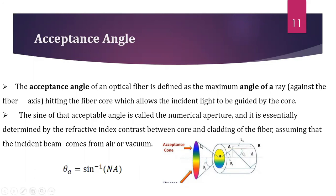Now let us see the acceptance cone. Light rays which enter into the core medium within the acceptance angle are allowed to propagate throughout the core medium. The acceptance cone is formed by rotating the acceptance angle about the fiber axis. It is a cone within which optical power may be coupled into the bound modes of the optical fiber.